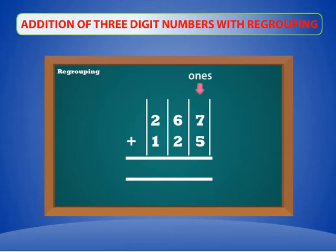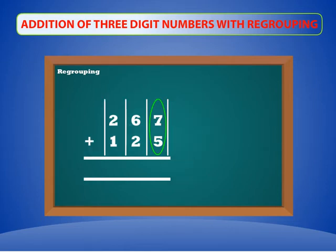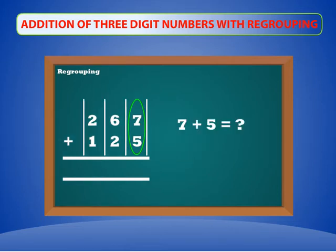Starting from the ones place, we will first add 7 plus 5. Do you think that we have to regroup these numbers? Yes, we have to regroup. So let's start. 7 plus 5 is equal to 12. So 2 will be placed in the ones column and 1 will be placed in the tens column.